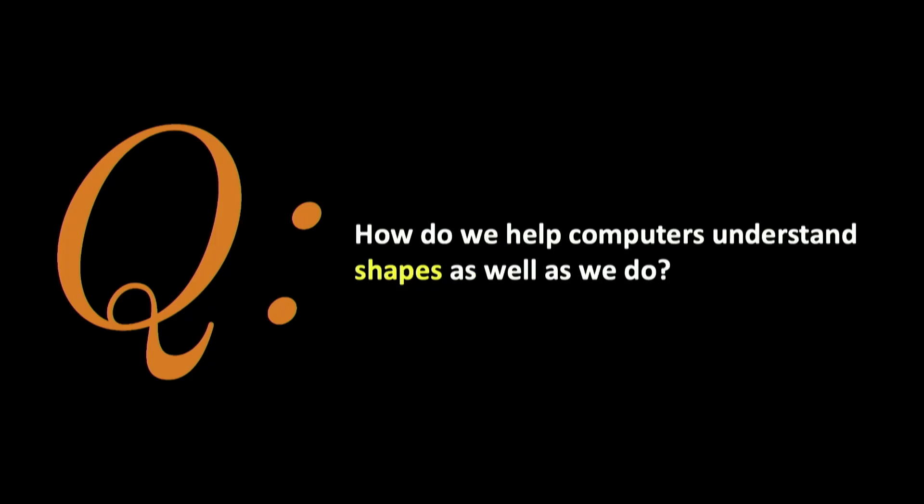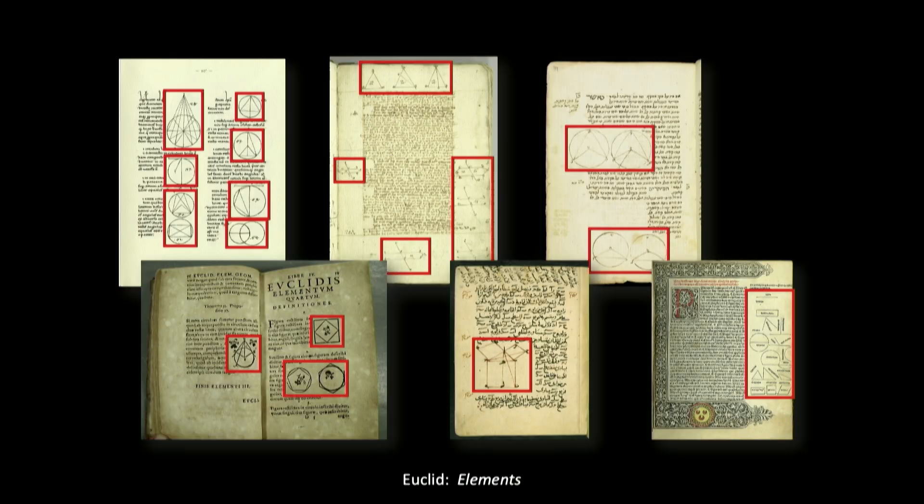How do we help computers understand shapes as well as we do? Thinking back to the last time many of us solved geometry problems, we might think to look at high school math for some help. Now, elementary geometry provides a beautiful lens through which we can begin to understand what makes a shape unique. But there's only one problem — the shapes that we encounter in real life aren't just triangles, circles, and platonic solids.